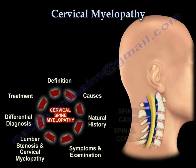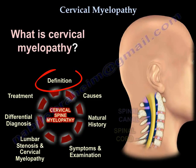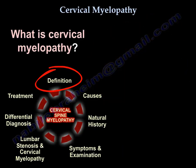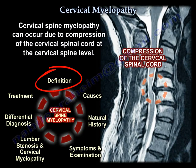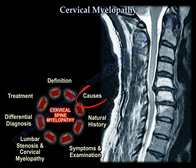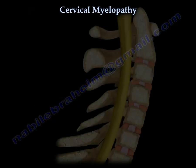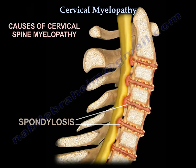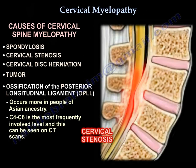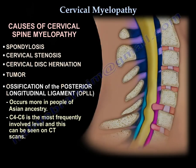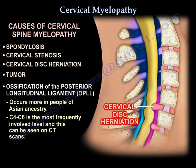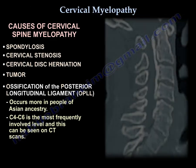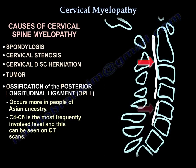Cervical myelopathy is compression of the spinal cord at the cervical level. Causes include cervical spondylosis, cervical stenosis, cervical disc herniation, tumor, and OPLL (ossification of the posterior longitudinal ligament), which occurs in Asians. C4 to C6 is the most frequently involved level, and that can be seen on CT scans.